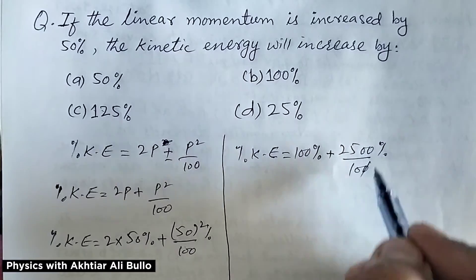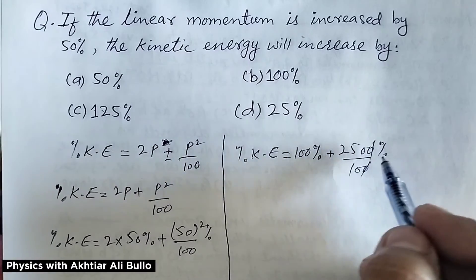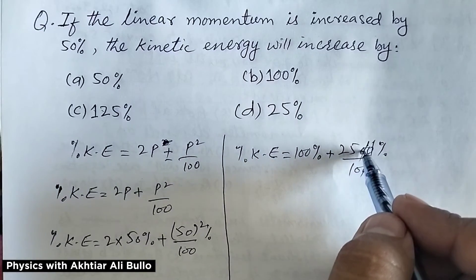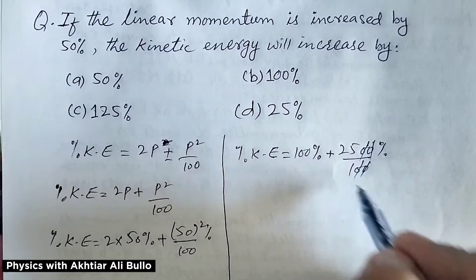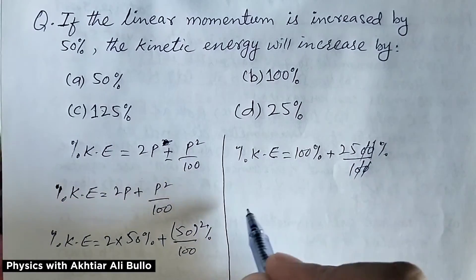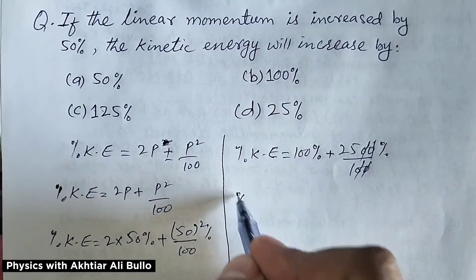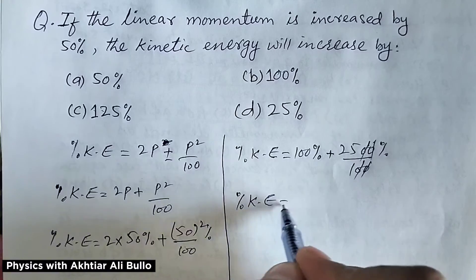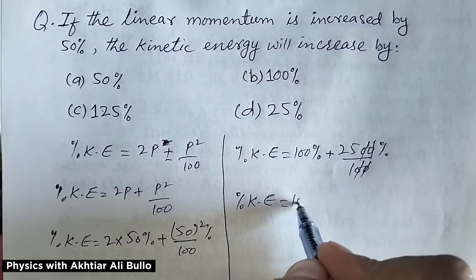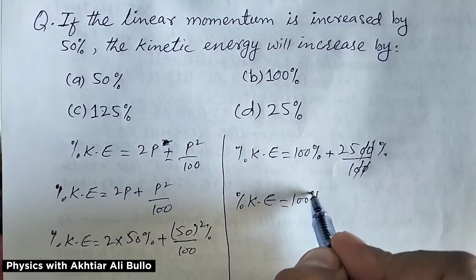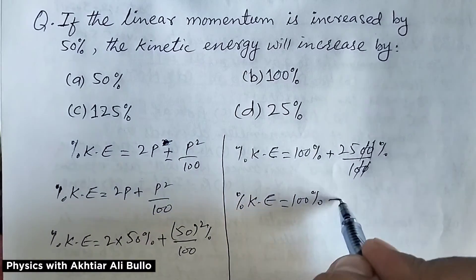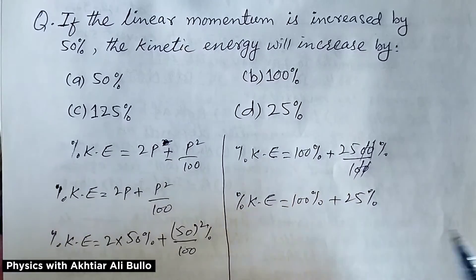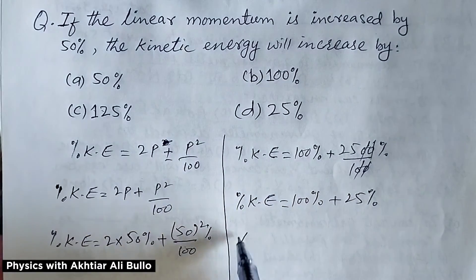This zero will get cancelled with this zero, and this zero will get cancelled with this zero. So, percentage increase in kinetic energy = 100% + 25%.